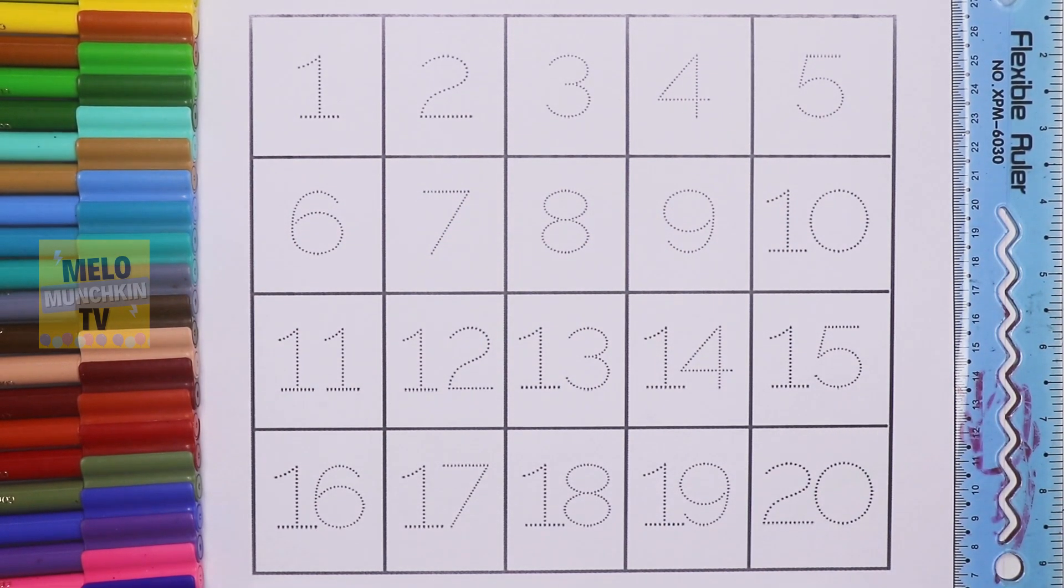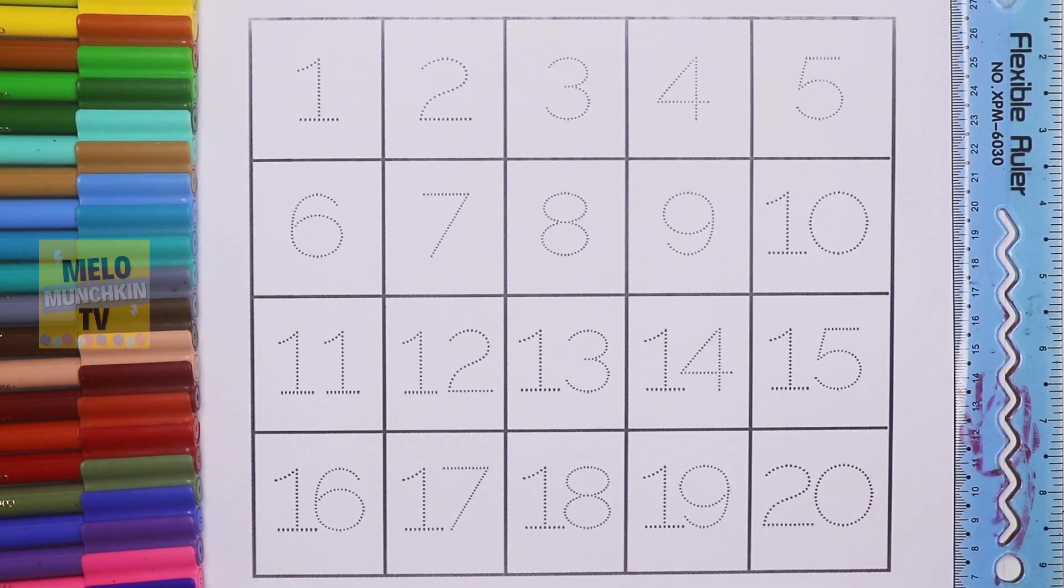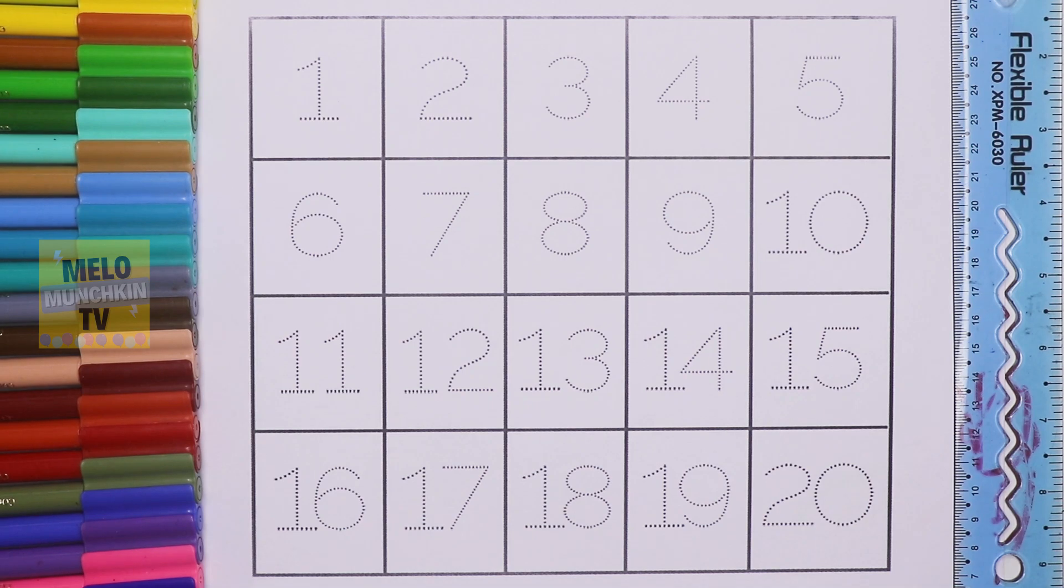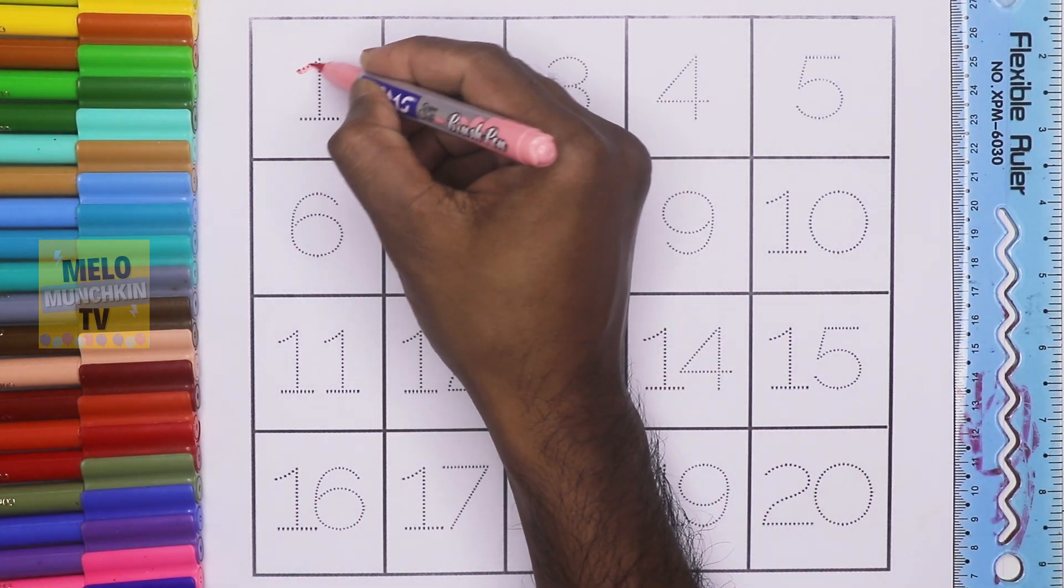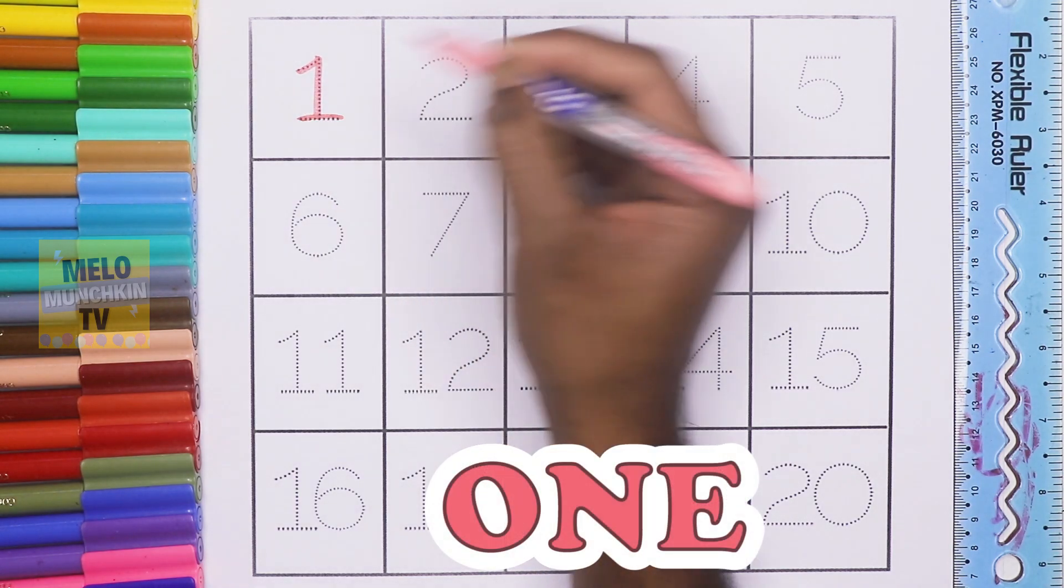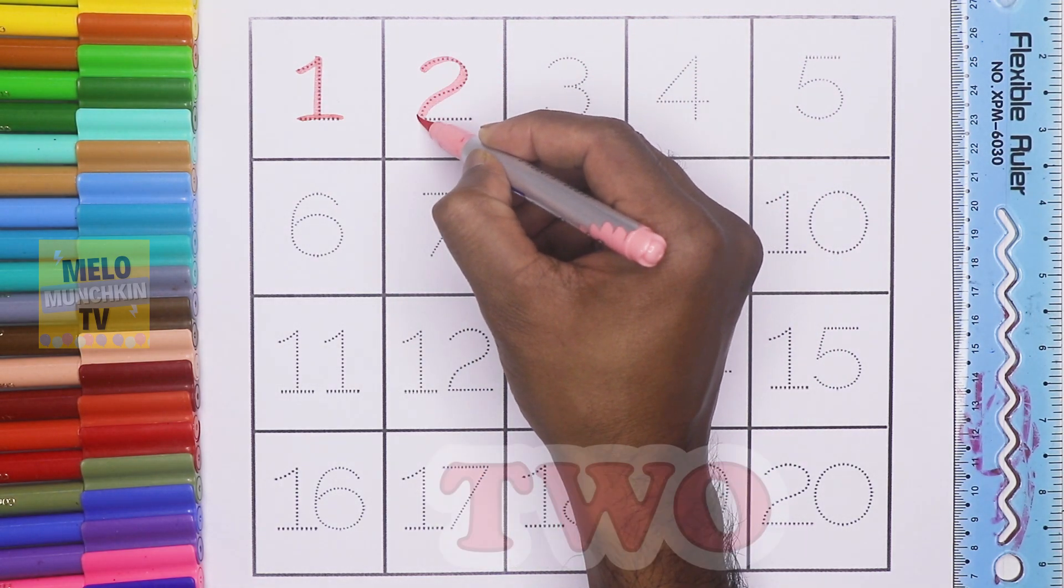Hello kids, today we will learn numbers from 1 to 20. Let's get started. For the first line, I'll take light pink color. This is number one, O-N-E, 1. This is number two, T-W-O, 2.